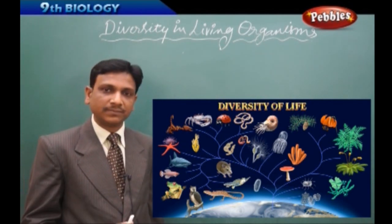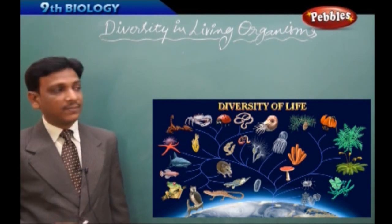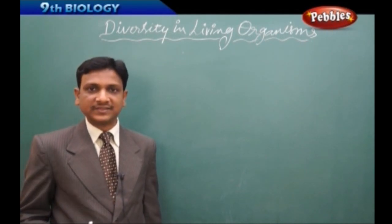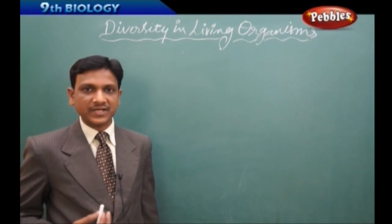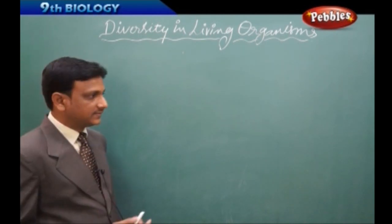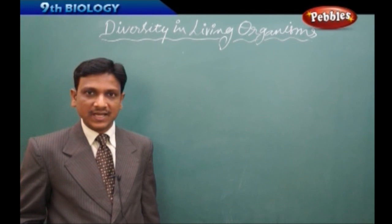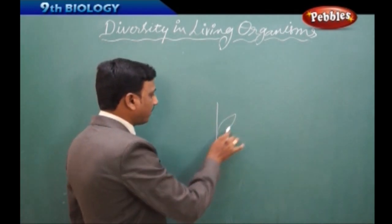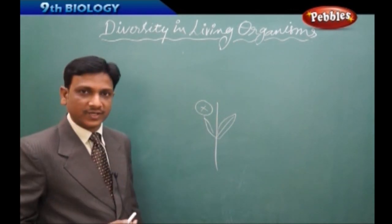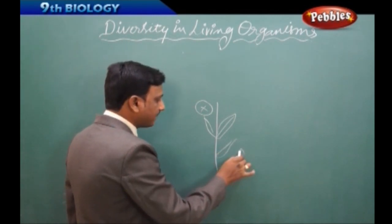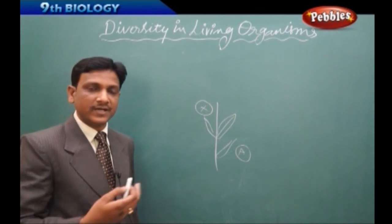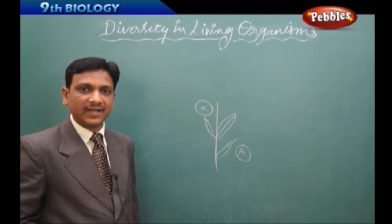Studying plants and animals independently, each in one's own way, is not correct or proper. For example, if a person goes to a forest and finds a plant and gives it a name, another person goes to the same forest, finds the same plant, and gives it a different name. People are giving their own individual names of their own choice to plants and animals.